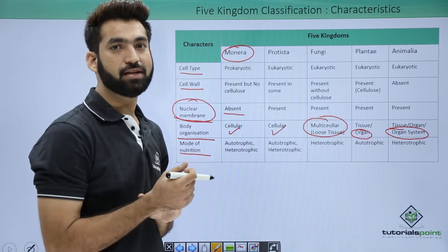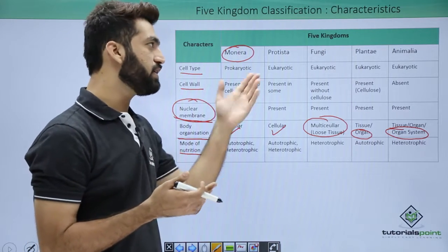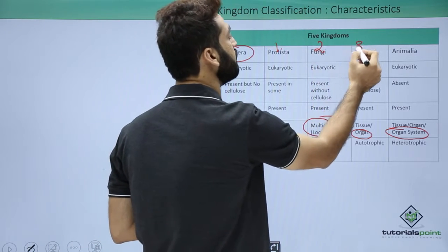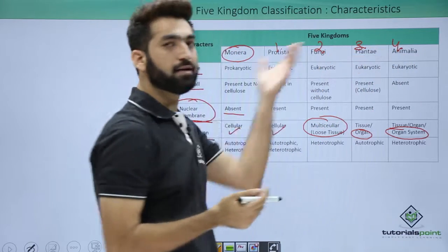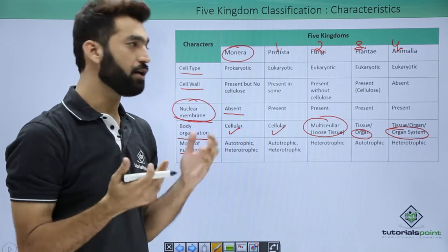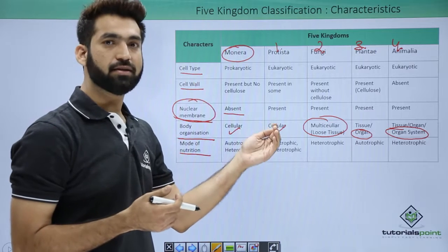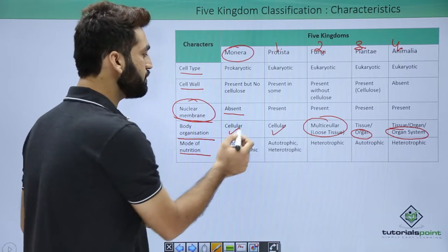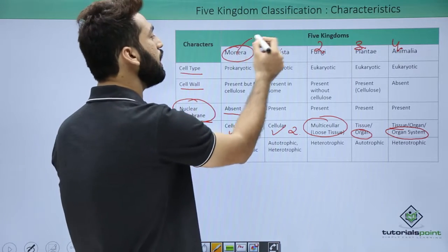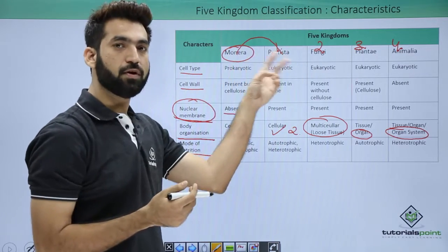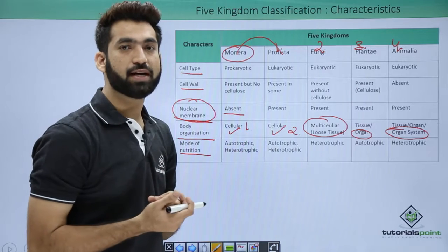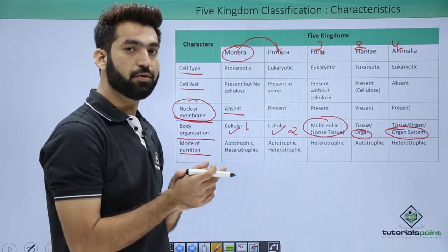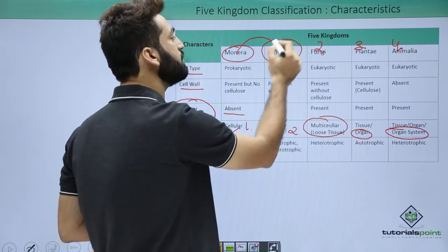Two common exam questions: In Whittaker's classification, how many kingdoms were assigned to eukaryotes? The answer is four — Protista, Fungi, Plantae, and Animalia. How many kingdoms were assigned to unicellular organisms? The answer is two — Monera and Protista. Which kingdom is assigned to unicellular eukaryotes specifically? The answer is only kingdom Protista.